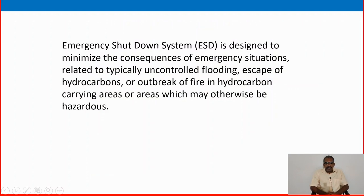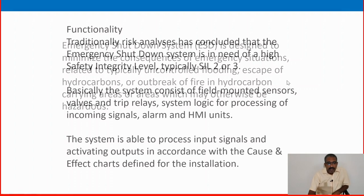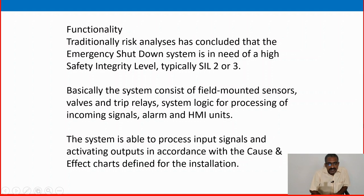The emergency shutdown system is designed to minimize the consequences of emergency situations related to typically controlled flooding, escaping of hydrocarbons, or outbreak of fire in hydrocarbon-carrying areas which may otherwise be hazardous. Traditionally, risk analysis has concluded that the emergency shutdown system needs a high safety integrity level — typically SIL 2 or 3.